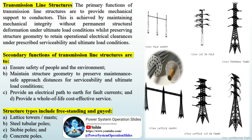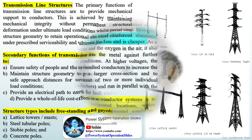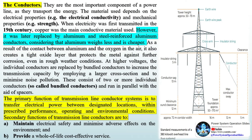Structure types include freestanding and guyed lattice towers, steel tubular poles, stobie poles, and concrete poles. Conductors are the most important component of a power line, as they transport the energy. The material used depends on the electrical properties, e.g., electrical conductivity, and mechanical properties, e.g., strength.